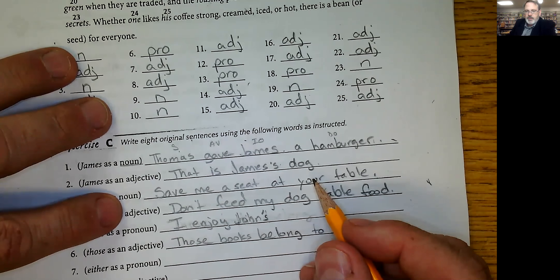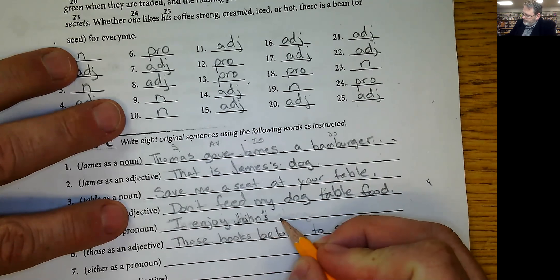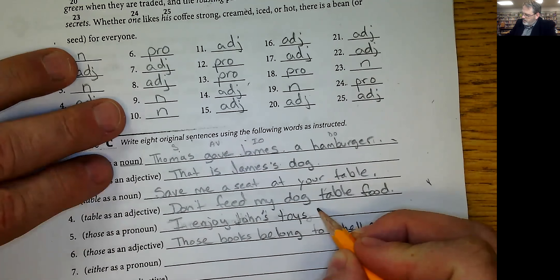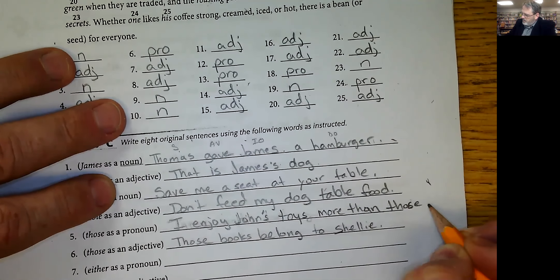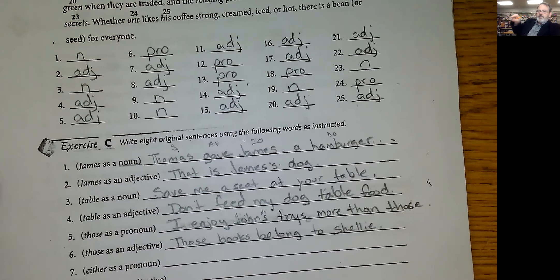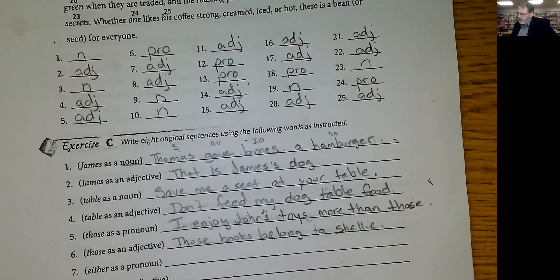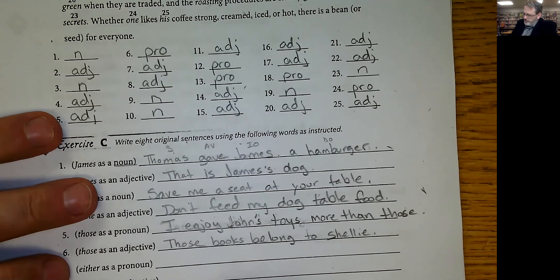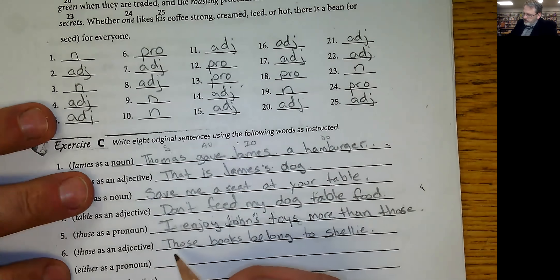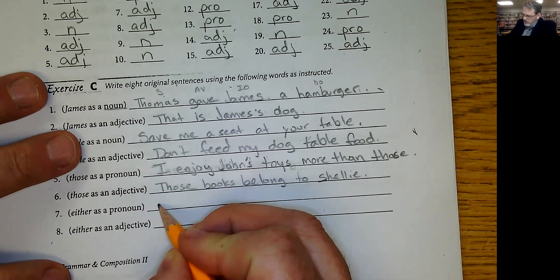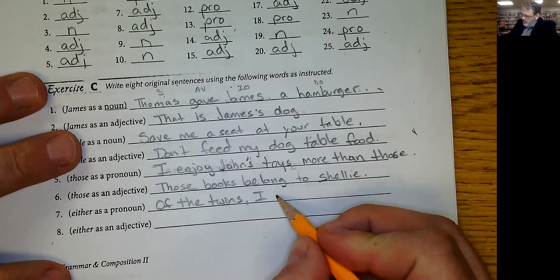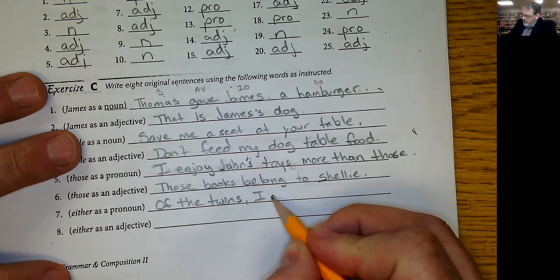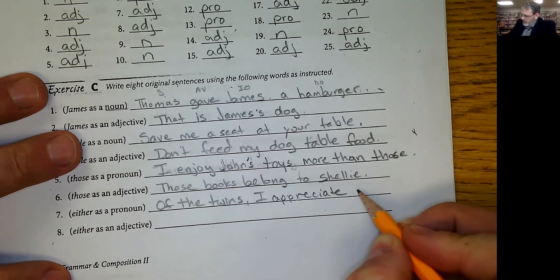I enjoy John's toys more than those. Assuming I'm demonstrating, I'm talking about some toys that are here or over there, I'm demonstrating it. Those are demonstrative pronouns, or that is a demonstrative pronoun. Either as a pronoun, let's see. Of the twins, I appreciate either.